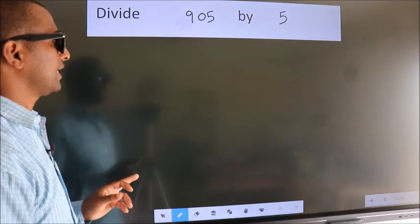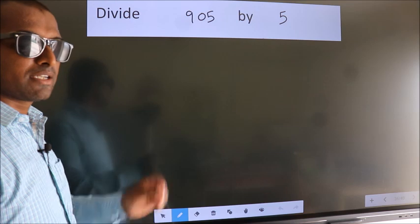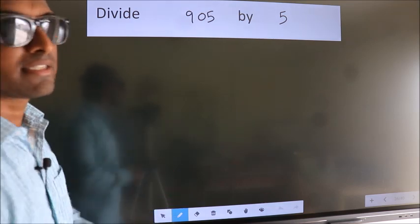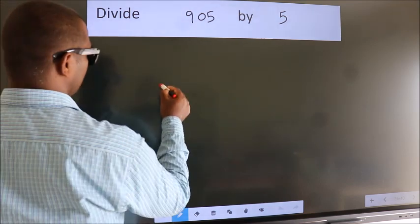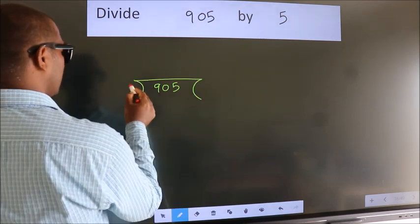Divide 905 by 5. To do this division, we should frame it in this way. 905 here, 5 here.